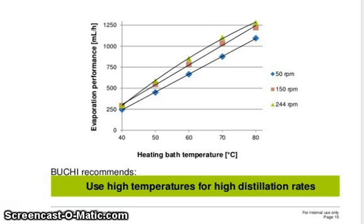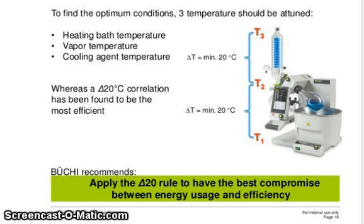Evaporation performance depends on heating bath temperature. You can see results at 50 RPM, 150 RPM, and 244 RPM — use high temperature for high distillation rate. To find the optimum conditions, three temperatures must be considered: heating bath temperature (T1), vapor temperature (T2), and cooling agent temperature (T3). A delta minimum of 20 degrees Celsius between each has been found to be most efficient.